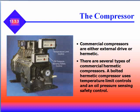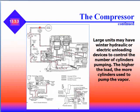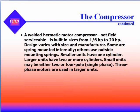Commercial compressors are either external drive or hermetic. There are several types of commercial hermetic compressors. A bolted hermetic compressor uses temperature limits and oil pressure sensing safety devices; large units may have hydraulic or electric unloading devices to control the number of cylinders pumping — the higher the load, the more cylinders are used to pump vapor. A welded hermetic compressor, not field serviceable, is built in sizes from 1.6 to 20 horsepower, and design varies with size and manufacturer.